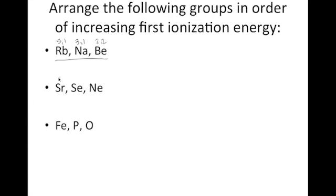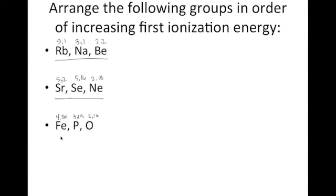These are the same elements we worked with for atomic radius. Strontium is in period 5, group 2; selenium is in period 4, group 16; and neon is in period 2, group 18. The most energy levels corresponds to the lowest first ionization energy, so these are already in order. For iron in period 4 as a transition metal, phosphorus in period 3 group 15, and oxygen in period 2 group 16 — again, these are already in order of increasing first ionization energy.